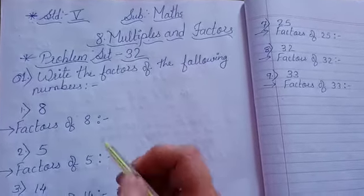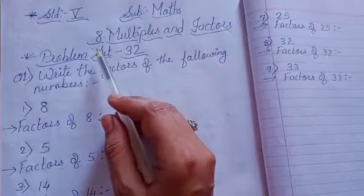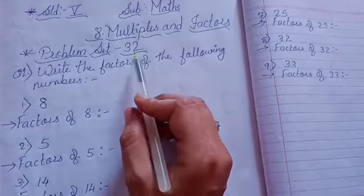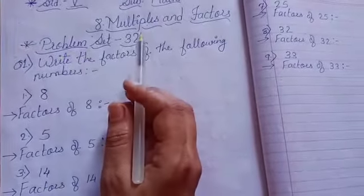Hello students, today we are going to start standard 5th subject maths chapter number 8, multiples and factors. Now let's see problem set 32.